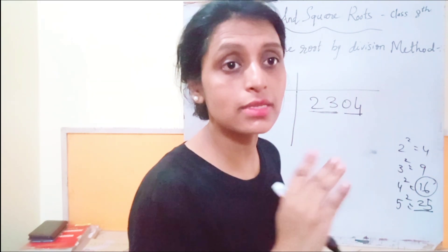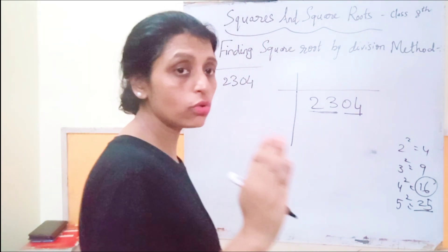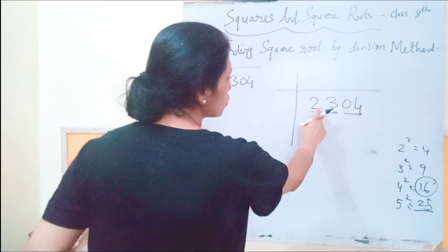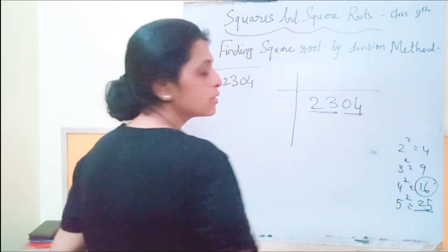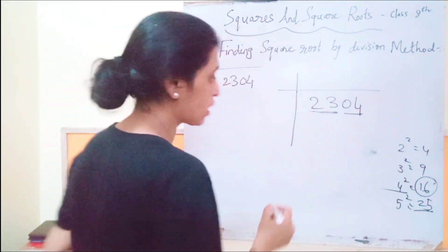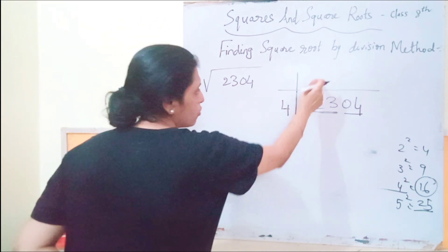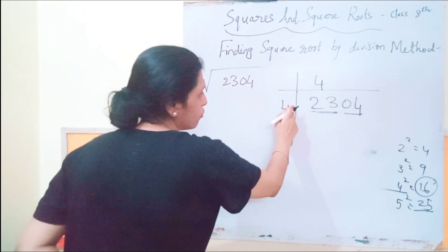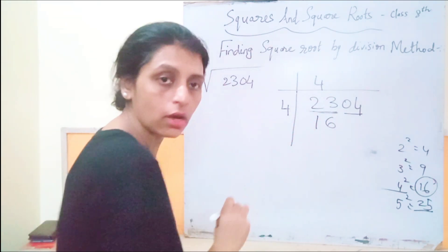We need to take the nearest square. The nearest square of 23 is 16, and 16 is the square of 4. So we write 4 in the quotient and also write 4 as the divisor. 4 fours are 16. Now we subtract — 23 minus 16 equals 7.